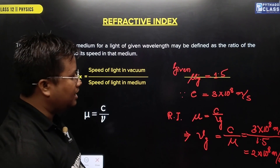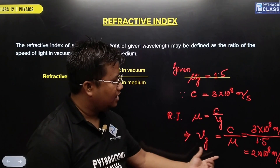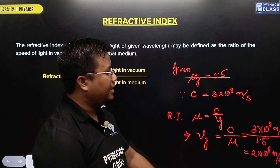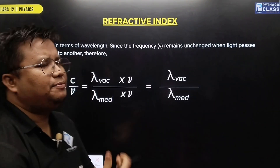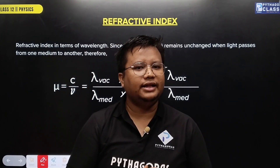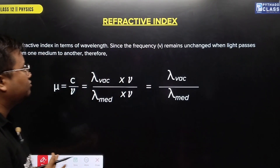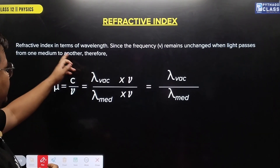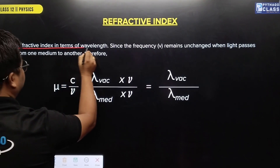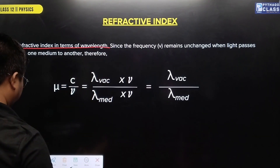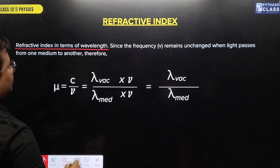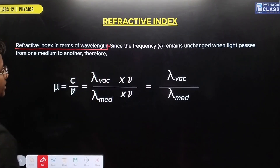So the speed of light in glass is 2 into 10 to the power 8 meters per second. Now, refractive index in terms of wavelength — the refractive index can also be expressed in terms of wavelength.